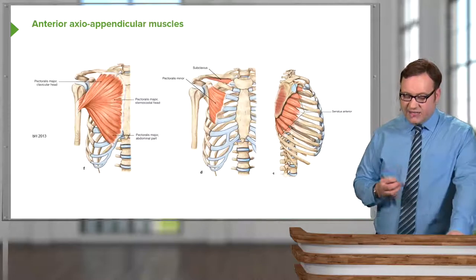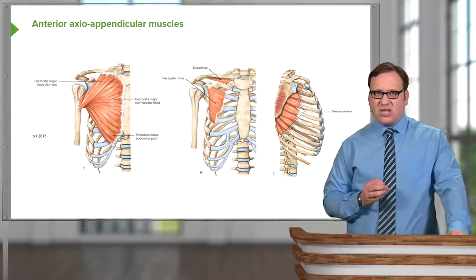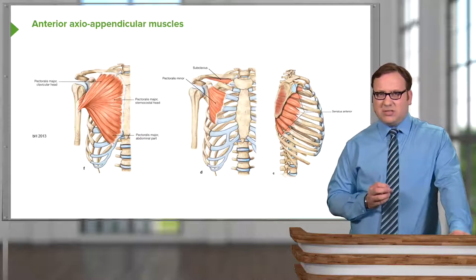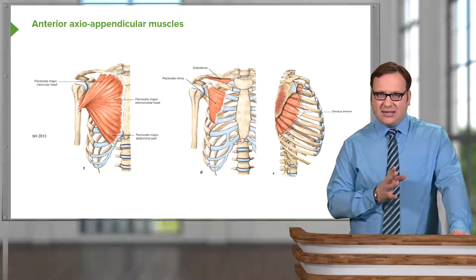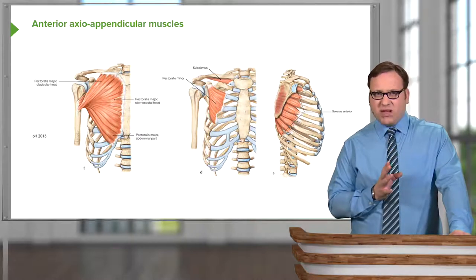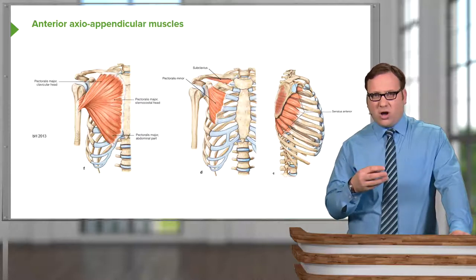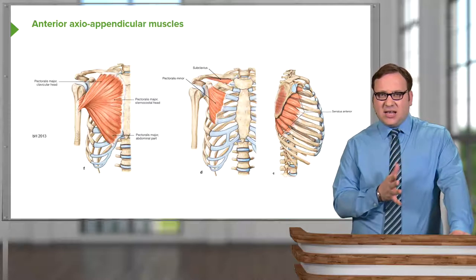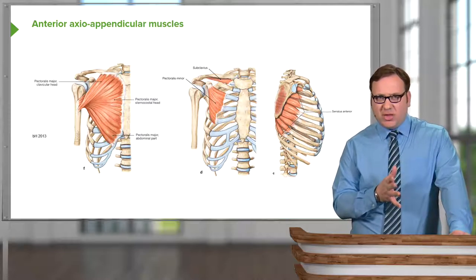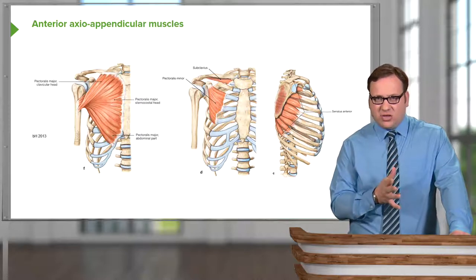The anterior axio-appendicular muscles — what do I mean by axio-appendicular muscles? These are muscles that run from the axial skeleton to the appendicular skeleton. So they run from the axial skeleton — the sternum, the ribs, the vertebral column — to the appendicular skeleton, which in this case is the upper limb, the superior appendicular skeleton: the clavicle, the scapula, the humerus.